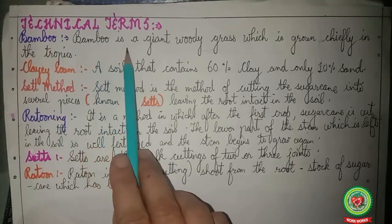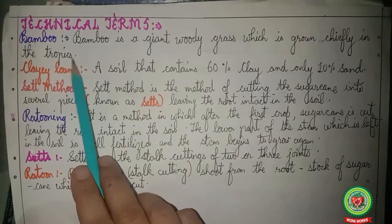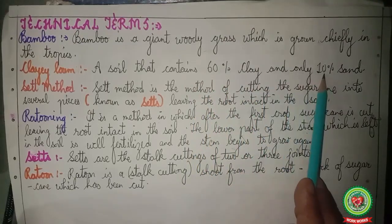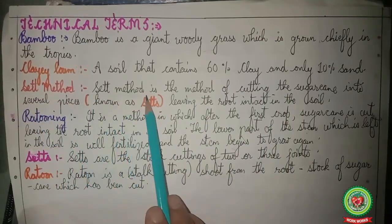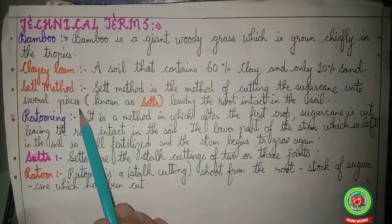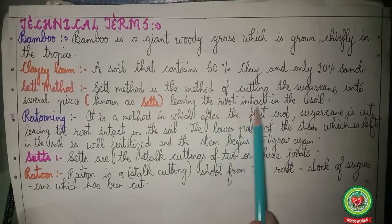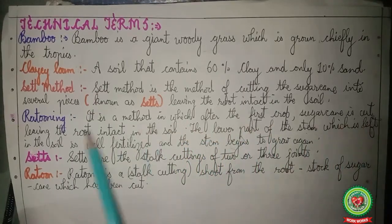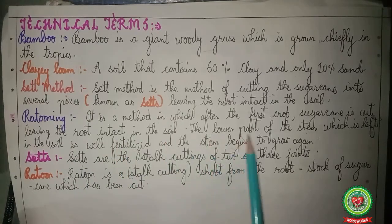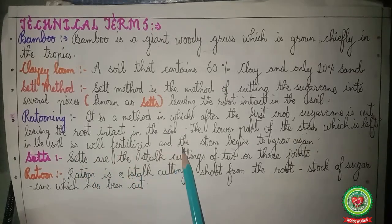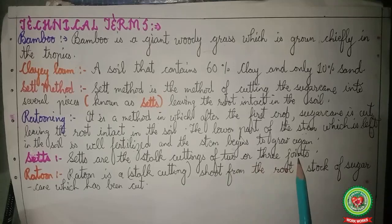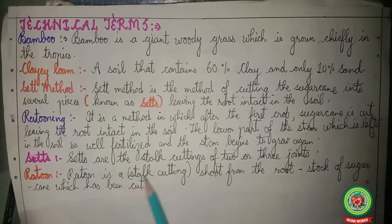Before reading the chapter, let us discuss various technical terms. Bamboo is a giant wooded grass grown chiefly in the tropics. Clay loam is a soil containing 60% clay and only 10% sand. Set method is the method of cutting sugarcane into several pieces known as sets, leaving the root intact in the soil. Ratooning is a method in which after the first crop, sugarcane is cut leaving the root intact; the lower part of the stem left in soil is well fertilized and begins to grow again. Sets are the stock cuttings of two or three joints. A ratoon is a stock cutting shoot from the root stock of sugarcane which has been cut.